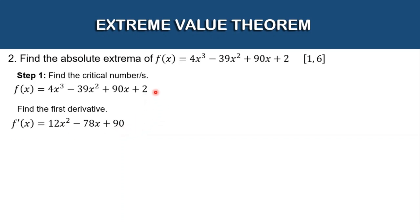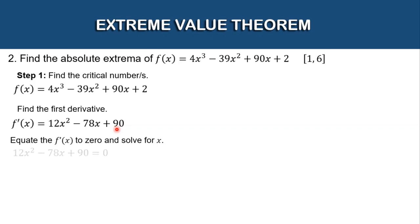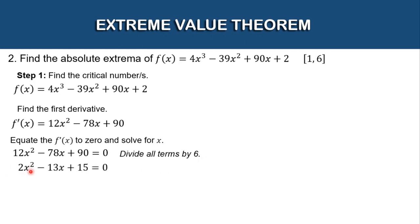This is the first derivative of our given function. Next, we equate the derivative to 0 and solve for x: 12x² − 78x + 90 = 0. We can simplify — since all three terms are divisible by 6, dividing all terms by 6 gives us 2x² − 13x + 15 = 0.